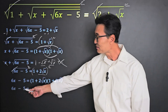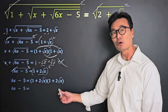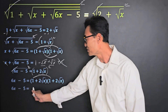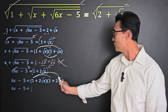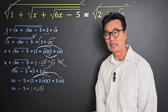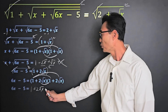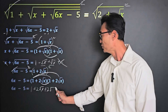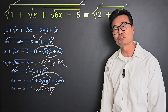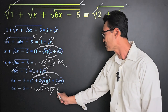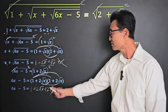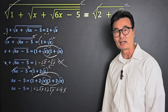Leaving the 6x minus 5 on the left side, let's go ahead and multiply — what we call FOIL. Where 1 times 1 gives us 1, 1 times 2 root x gives us 2 root x, 2 root x times 1 gives us 2 root x, and then lastly 2 root x times 2 root x will give us 4 from the 2 times 2, and x from root x times root x.